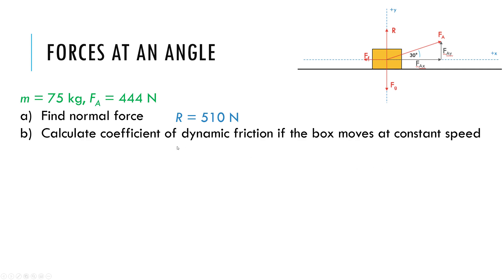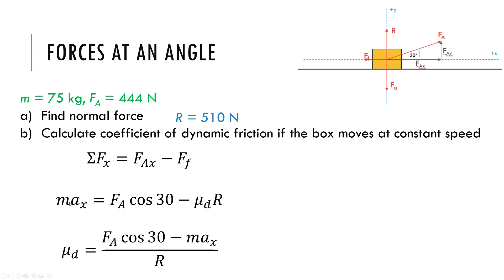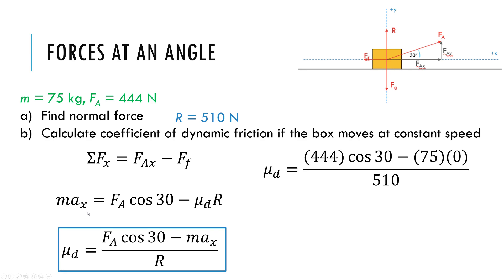For the next part, finding the coefficient of dynamic friction, I'm dealing with the horizontal direction. I have two horizontal forces: FAX to the right and friction FF to the left. Setting the net force equal to MA, and since I'm moving at constant speed the acceleration is zero. Using trig, the x component equals the applied force times the cosine of the angle. And friction equals the coefficient of dynamic friction times the normal force. Solving algebraically for the coefficient of dynamic friction gives 0.75 in this example.